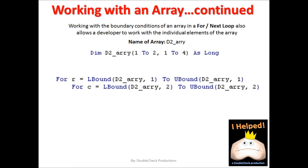In previous examples, we've used the for-each loop and the for-next loop, but we've always specified the ranges. What I want you to notice here is that we have a two-dimensional array. Just like a single-dimensional array, it has lower and upper boundaries. The trick is how to reference the boundaries for each dimension in a multi-dimensional array.